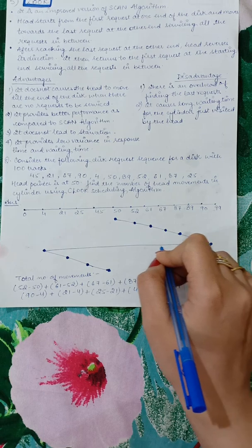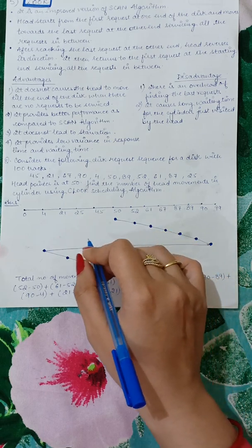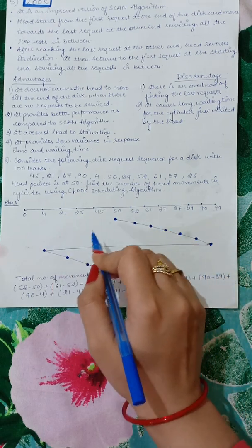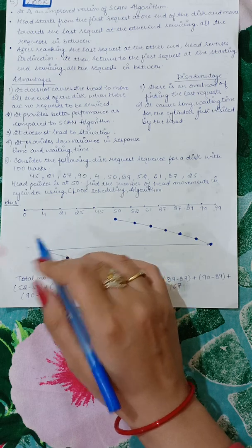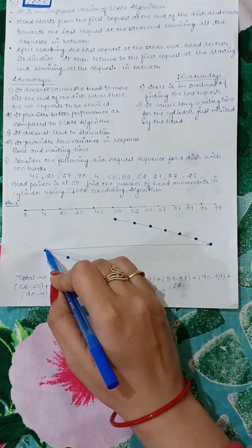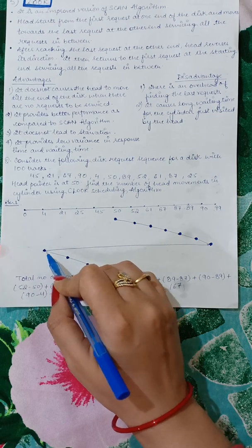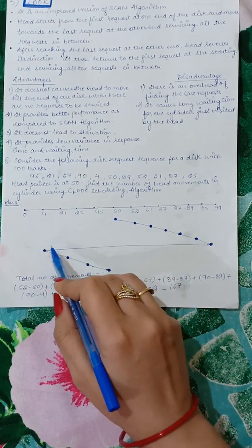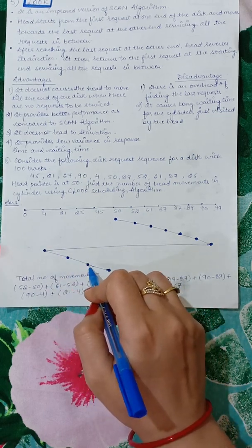After the reverse movement, it will jump to the first request without servicing. So it goes to 21, which is the first request. Now our movement will start again from 21, then 25, then 45.